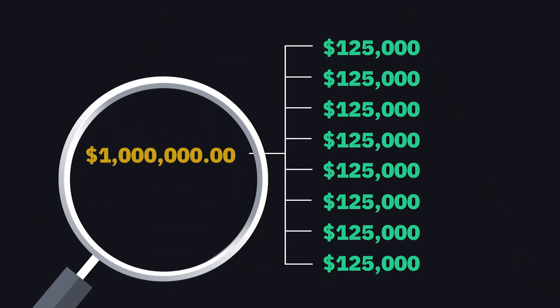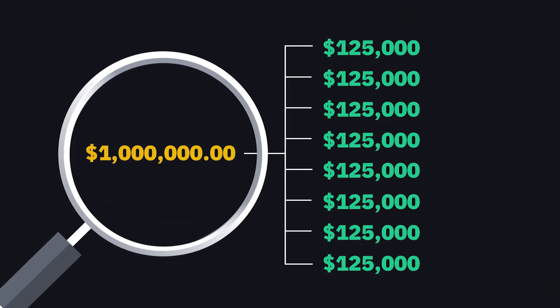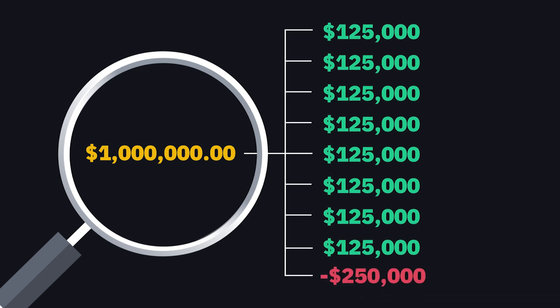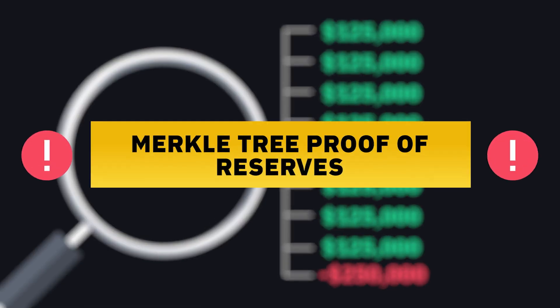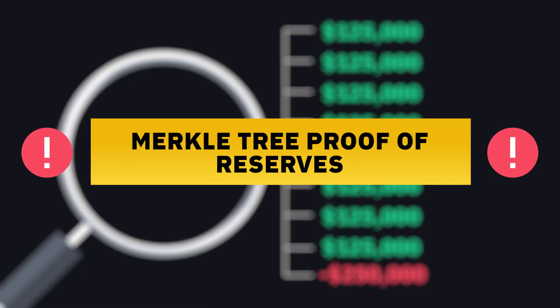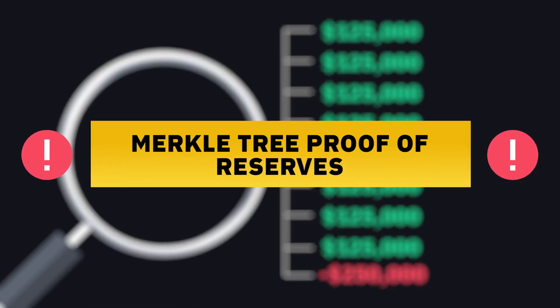For example, an exchange has a million dollars of user assets in custody. They create a fake user account with a negative balance of $250,000. Therefore, the total reserves listed is reduced to $750,000. This is why some observers have had trouble fully accepting Merkle tree proof of reserves.